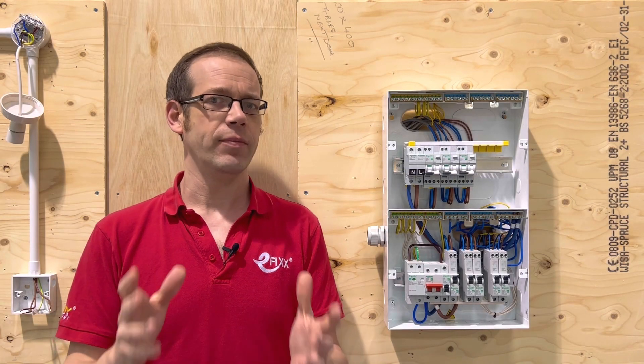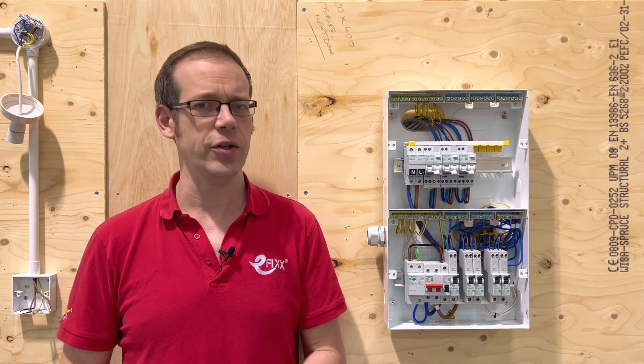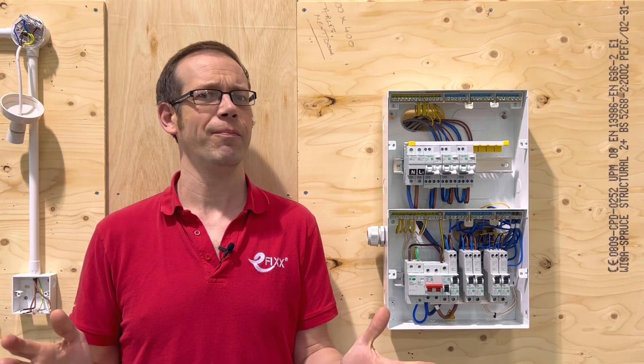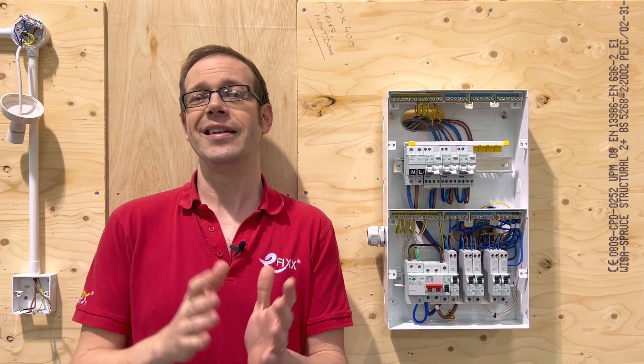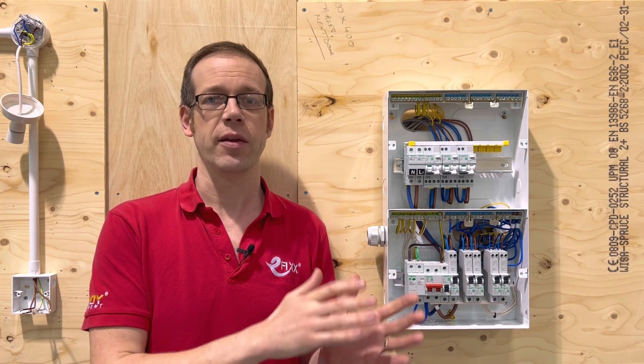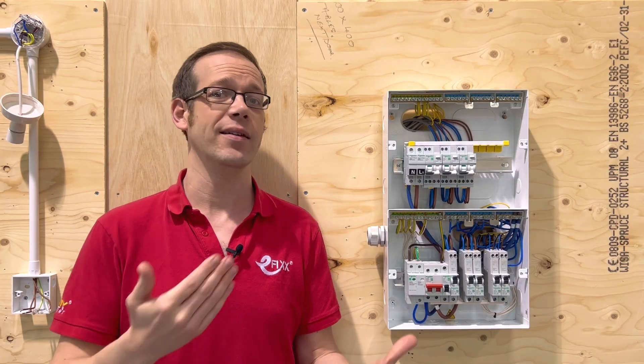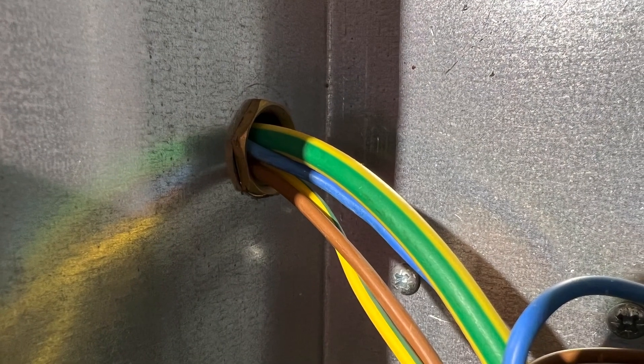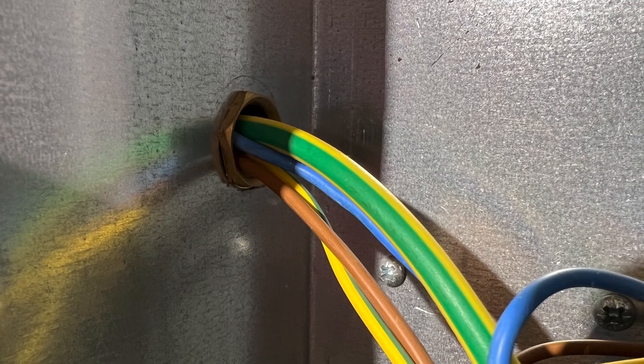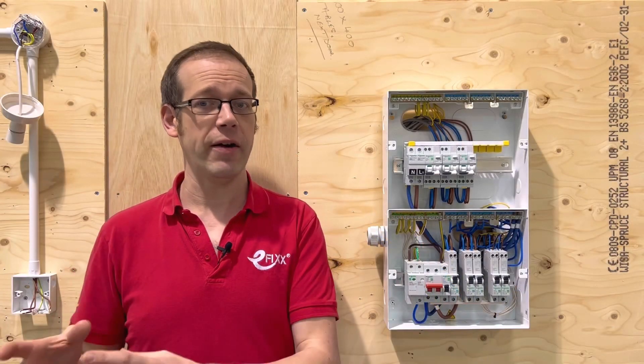So let's try and unravel this. The RCD is viewed as additional protection. In addition to what? Well the regulation tells us it's in addition to basic protection which are the methods we use to stop people coming into direct contact with bits that are meant to be live. As in we wrap conductors in insulation or put live parts in enclosures and behind barriers and so on.